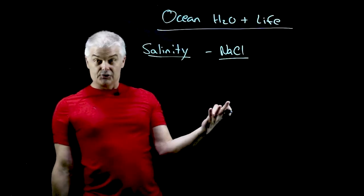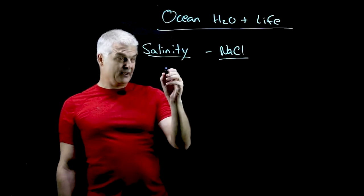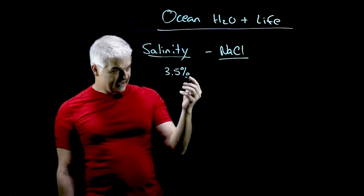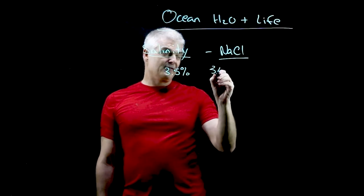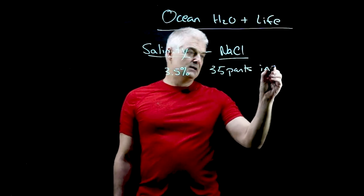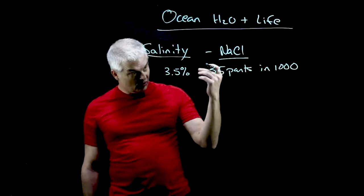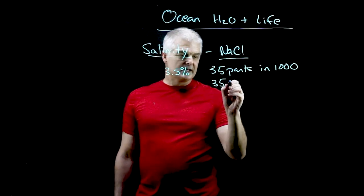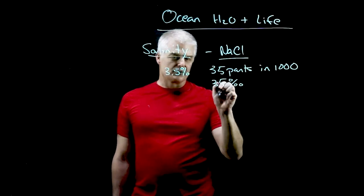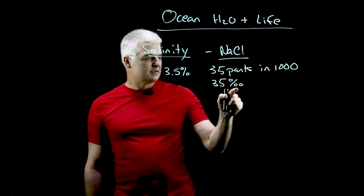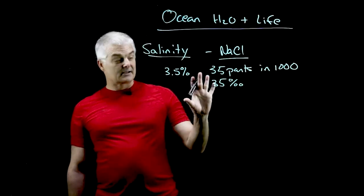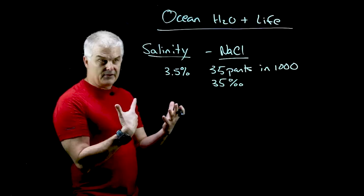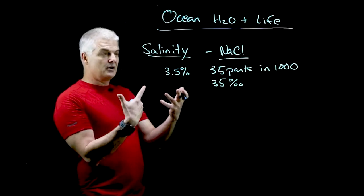How salty is the ocean? Well, it's around three and a half percent, or actually 35 parts per thousand. The way they actually write this is kind of cool — it's 35 parts per thousand (‰). This is out of a thousand, not a hundred. So 3.5% of the oceans are made of salts.